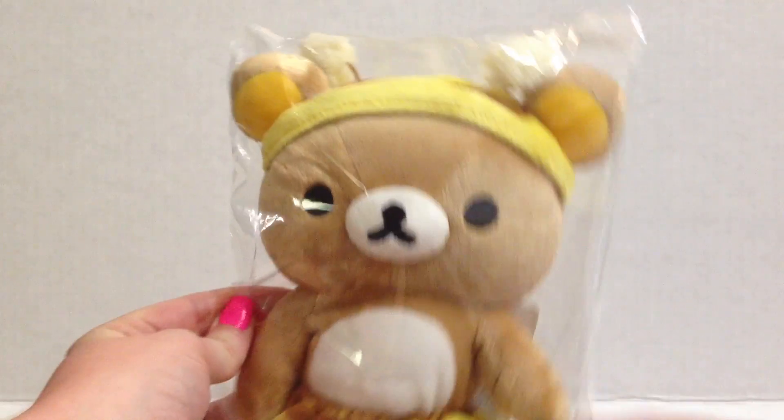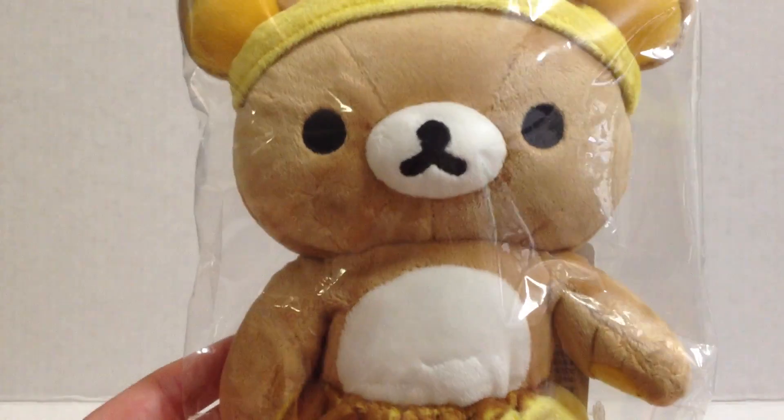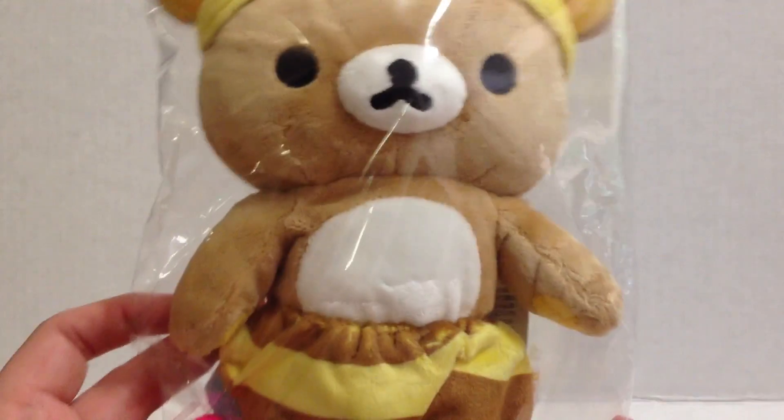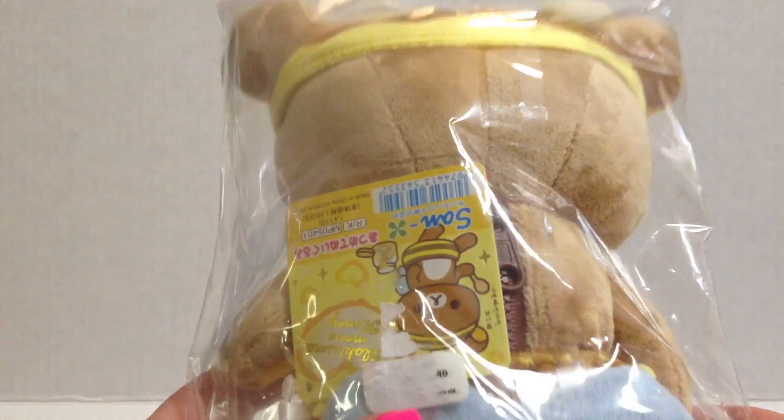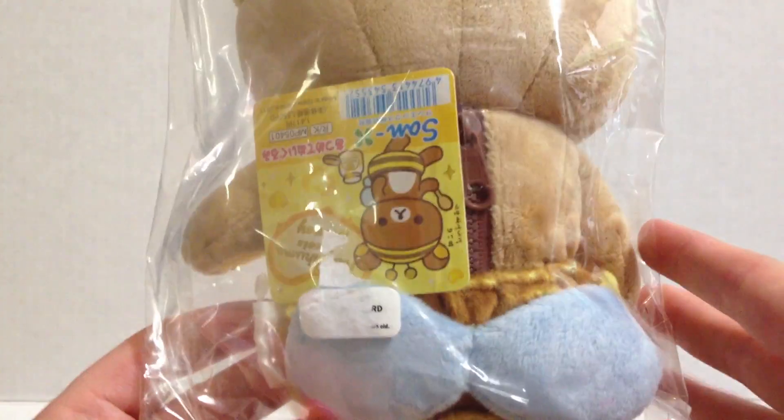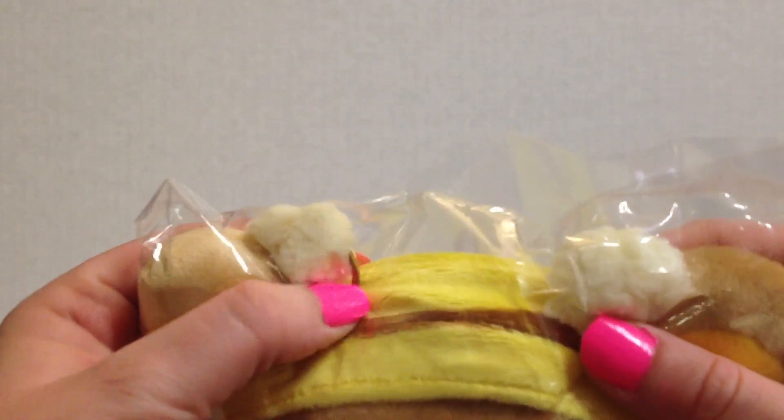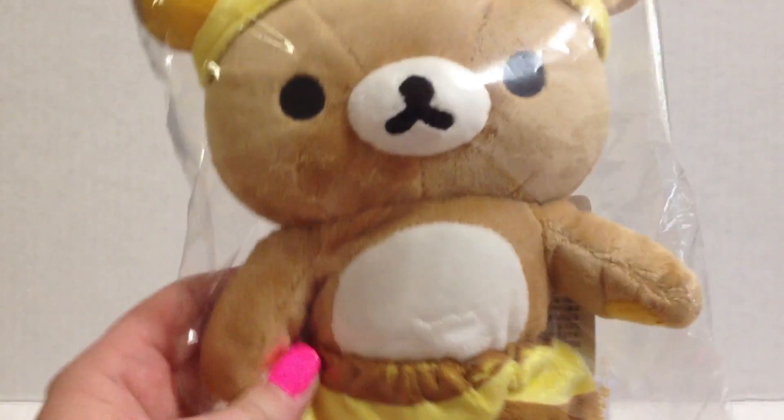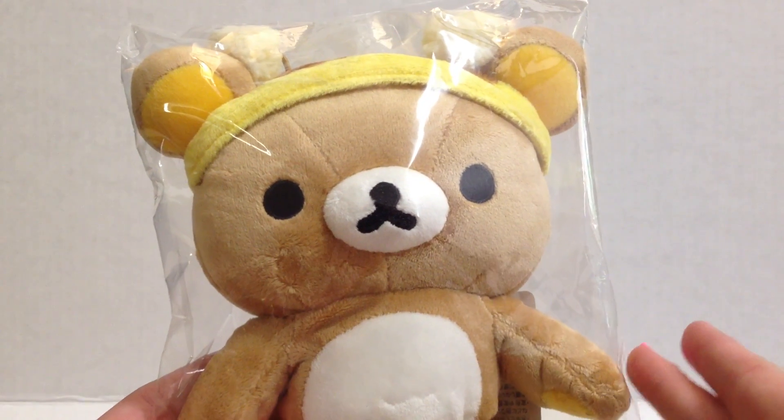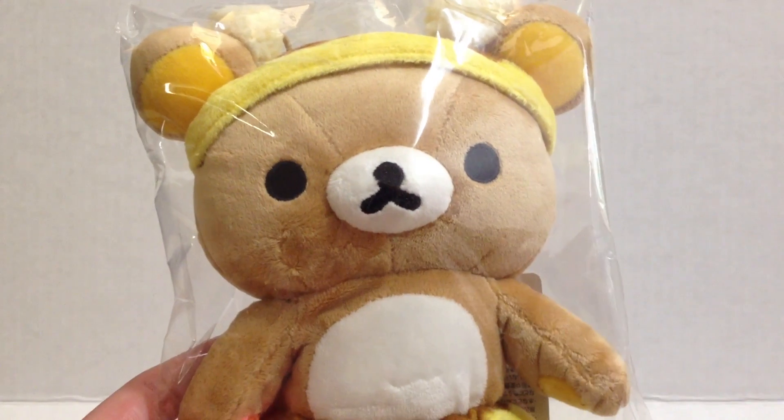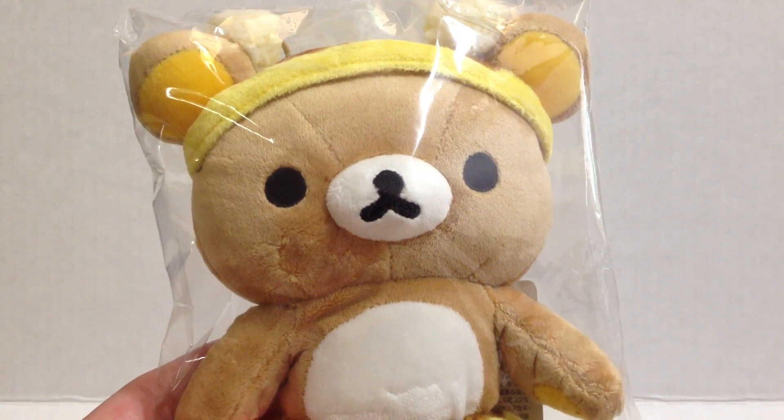The items that I got were this Rilakkuma in a bee costume plush. I actually already have the Korilakkuma version of this plush and I've been wanting to get the Rilakkuma one for a really long time. So I'm really excited that I finally got it. It's really cute and he has little bee panties and a little bee hat and a little antenna. So I'm really excited about having this plush finally. I will be doing a plush collection video soon. I'm waiting on a few more things, but I will definitely be doing one soon for those who have been asking.